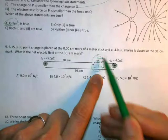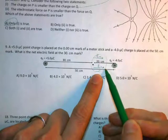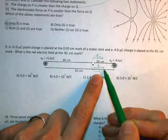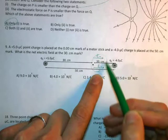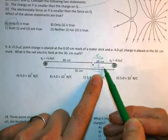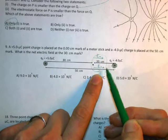And we know that the net field vector is going to be, because both of these point to the right, we know that they're going to add together. And my net field vector is going to be a vector that's longer than either of these two, they're going to add together.